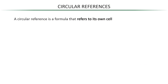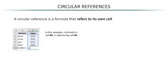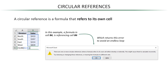First things first, a circular reference is a formula that refers to its own cell. So in this example, the SUM function in cell B6 is including cell B6 in the SUM range — this is a circular reference. So when you click Enter, Excel returns an error, because circular references are disabled by default so that Excel doesn't enter an endless calculation loop. It's actually pretty smart.